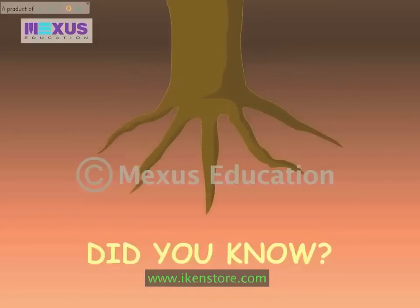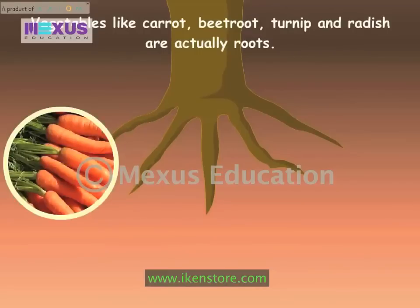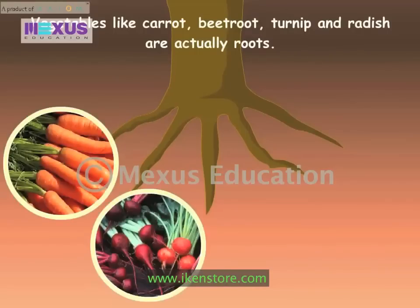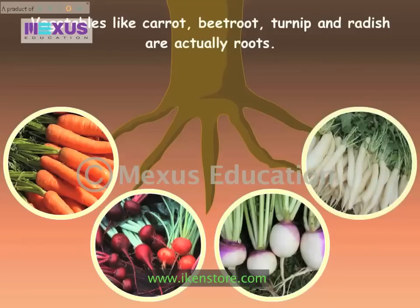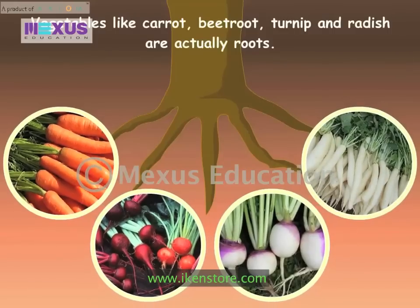Did you know? Vegetables like carrot, beetroot, turnip and radish are actually roots.